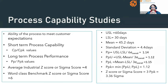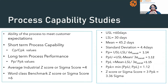Long-term is the overall process performance, studied using PP and PPK values. The difference between short-term CP/CPK and long-term PP/PPK depends on how we take the data from the process — whether we are taking data at shorter time intervals or looking at overall data from the process for long-term process performance.